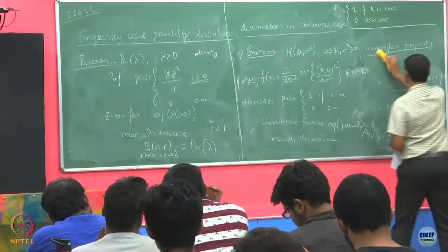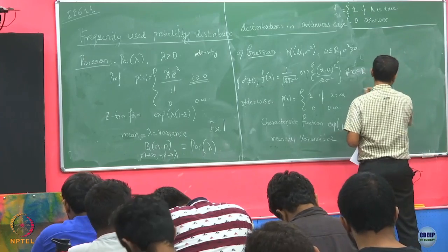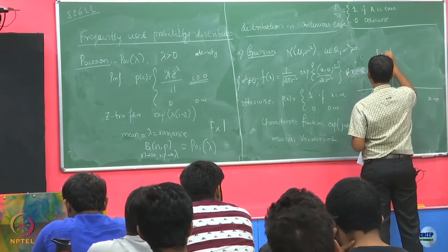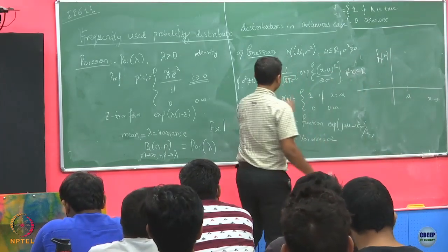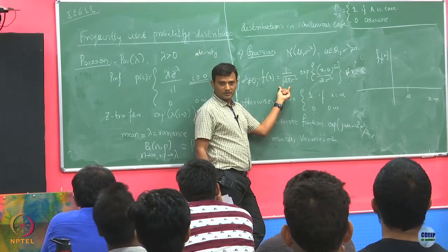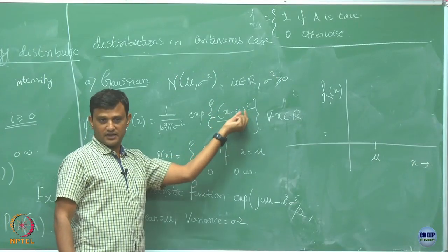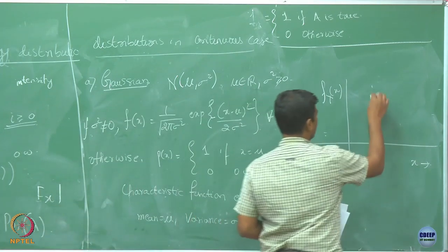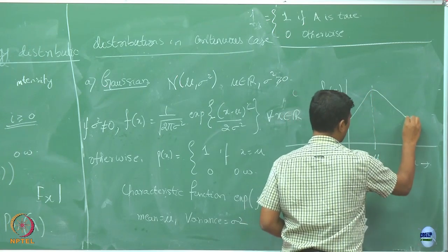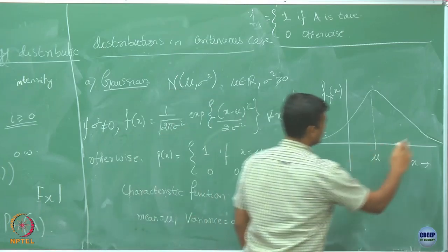Since this is one of the most popular distributions, let us examine it. Let's say this is mu here on the x-axis. Just looking at this function — is this function symmetric in x about mu? Because there is a square term here, it will be symmetric about mu. So it is indeed symmetric.